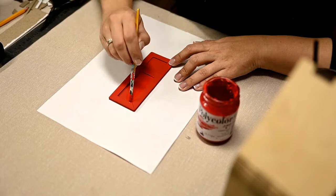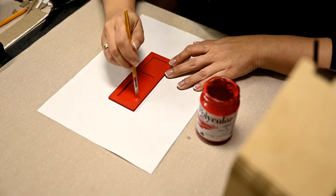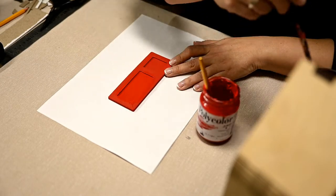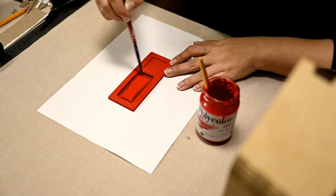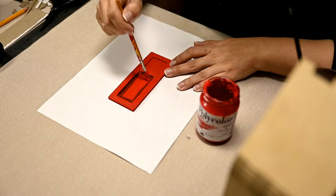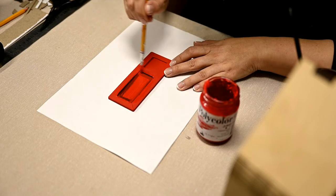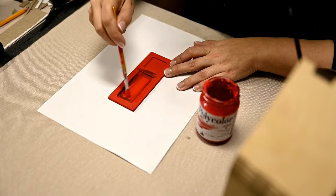After the first layer of red has dried I'm painting the door using the same technique that I already showed in a recent video about Dollar Tree Toys Makeover with homemade chalk paints, so I'll just link that video in the description box below.